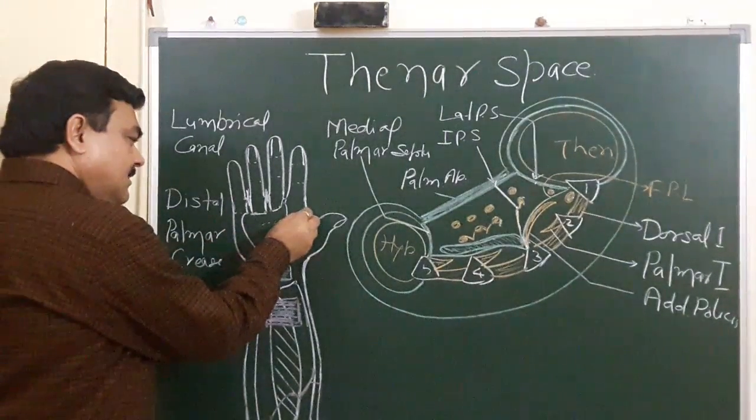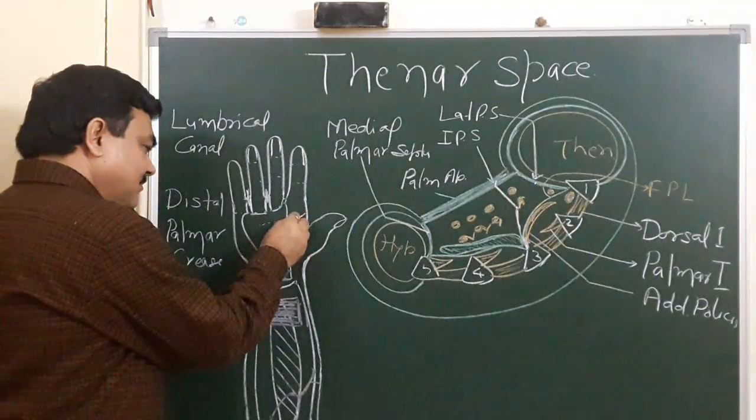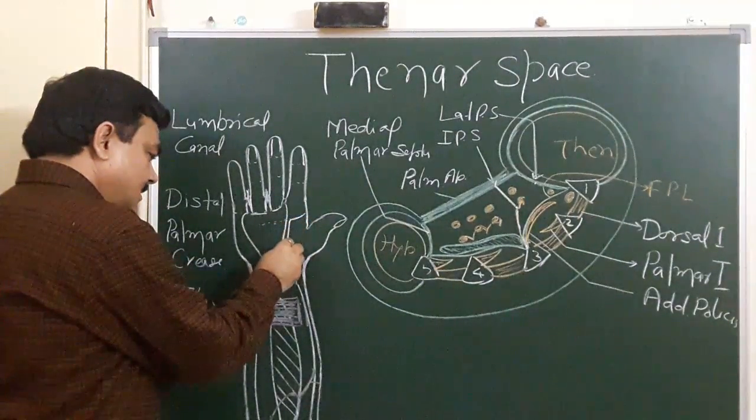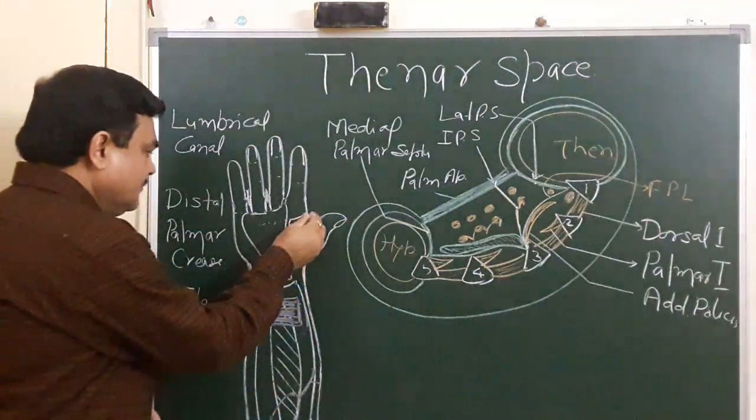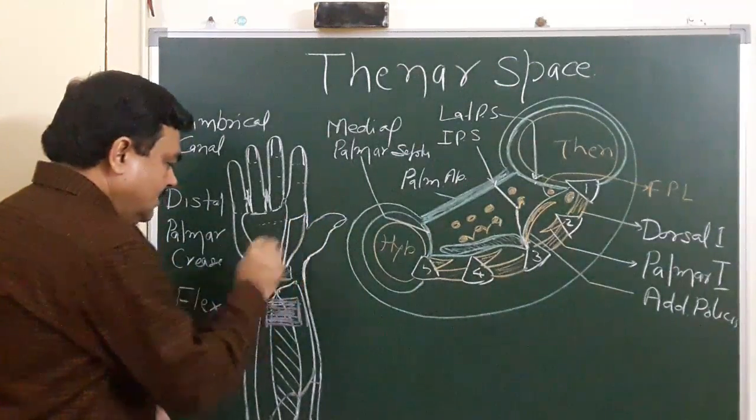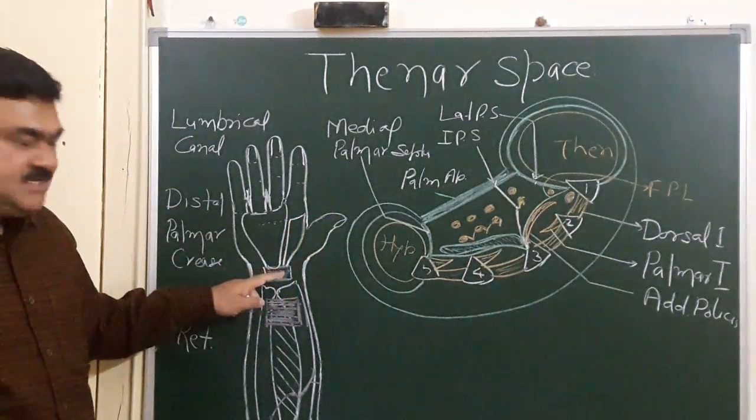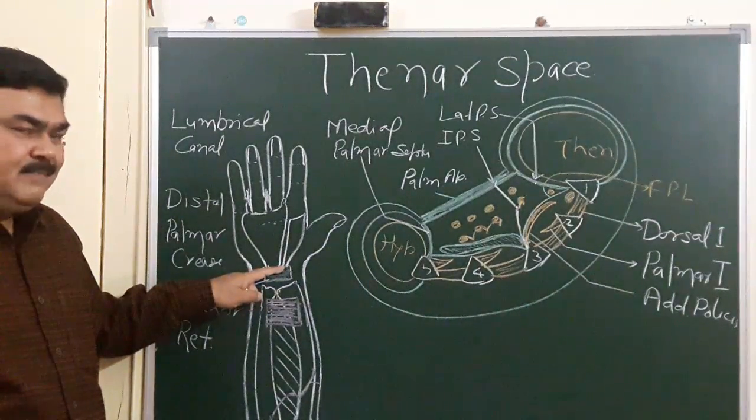This is again, this is a triangular space present in the lateral part of the hollow of the palm. Now, its extension is proximally up to the distal margin of flexor retinaculum.